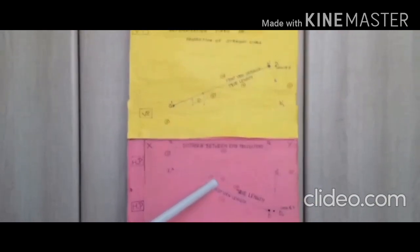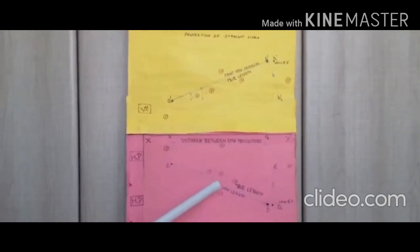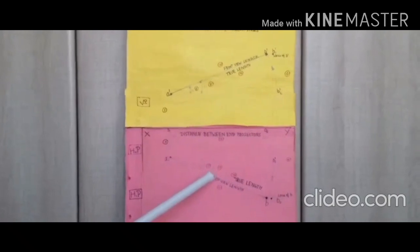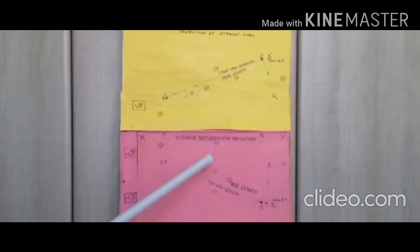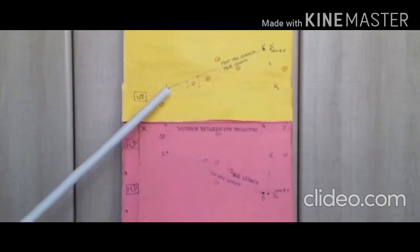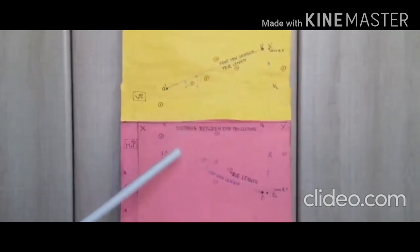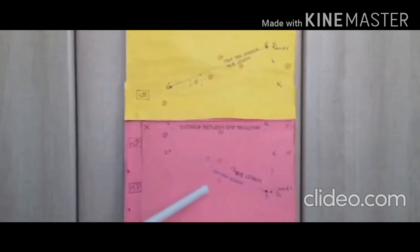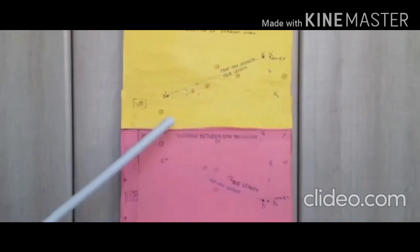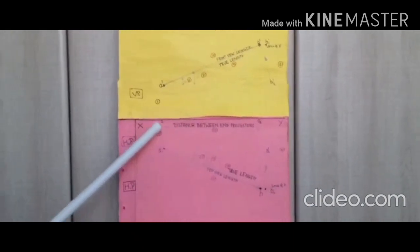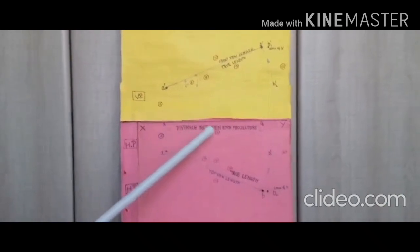Ten: front view length represented by A'B'. Eleven: top view length represented by AB. Twelve: distance between end projectors O1 and O2.